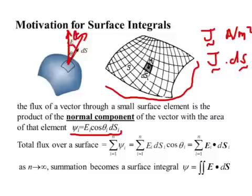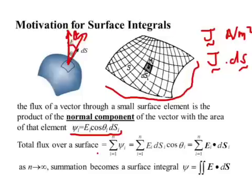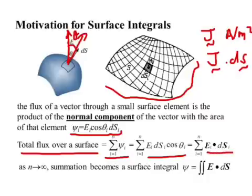If this element is the i-th surface element, we call the angle theta_i, and the vector magnitude E_i can change from one point to another. On the i-th element it has magnitude E_i and its normal component is E_i cosine theta_i. To get the total flux from a surface, you sum contributions from each individual small surface element: the summation of E_i dS_i cosine theta_i. From the properties of the dot product, multiplying magnitudes of two vectors by cosine theta is equivalent to their dot product.